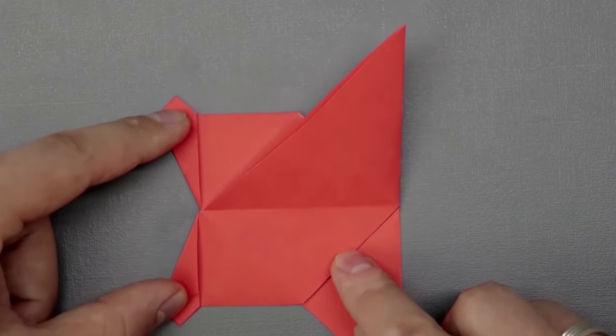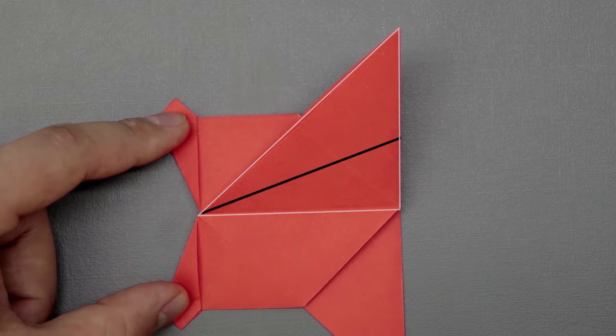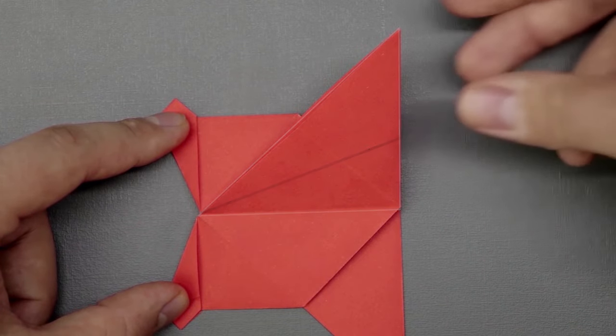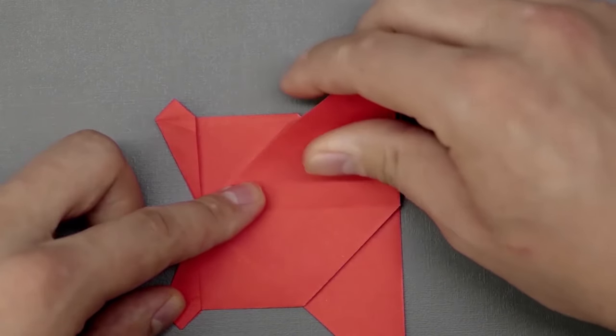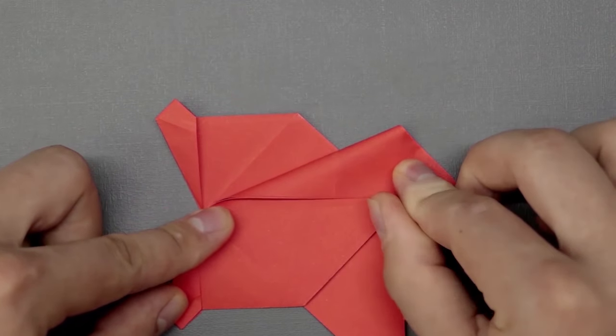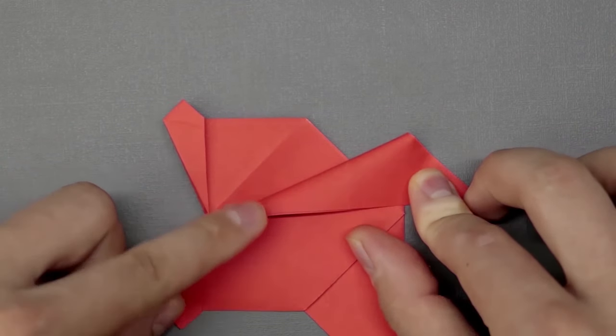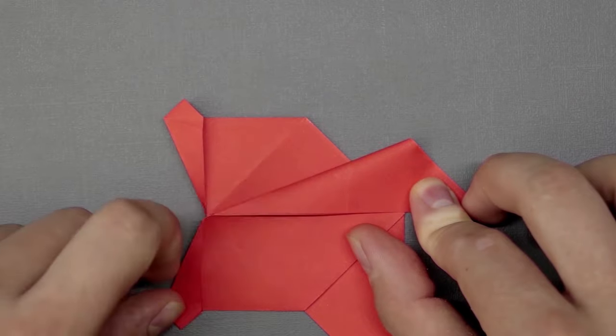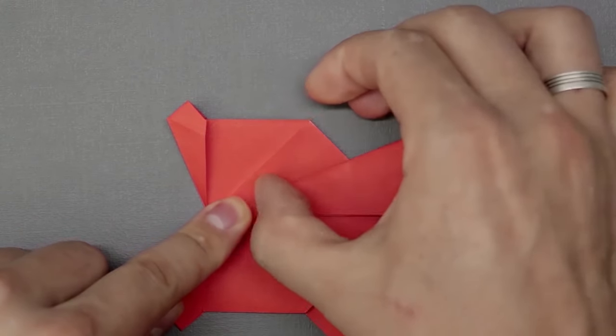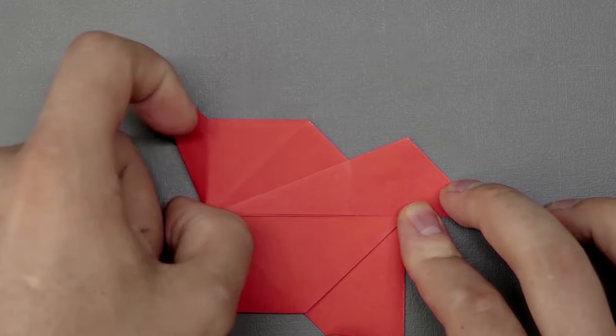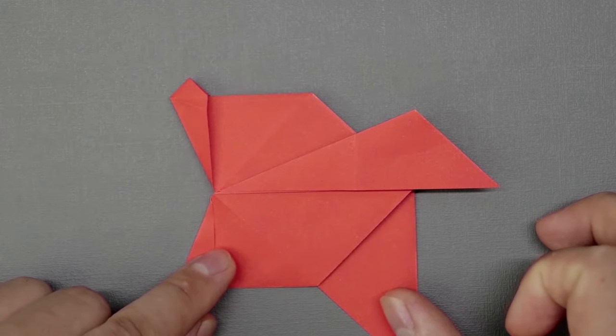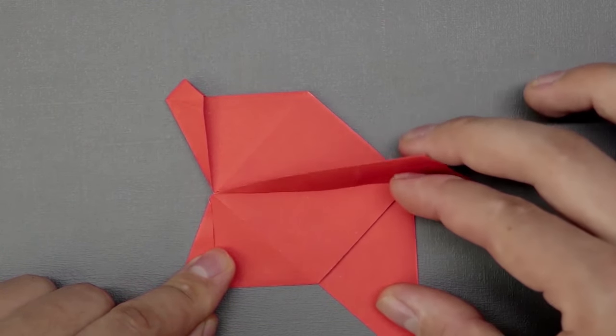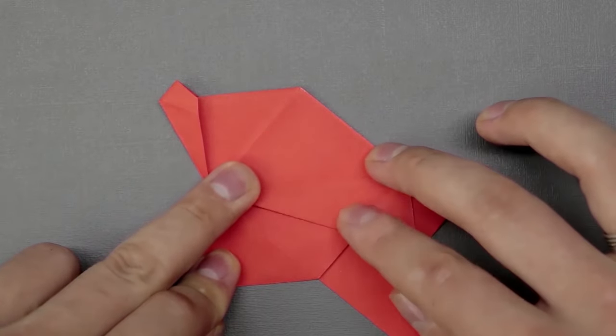And fold it diagonally. Just like before, the top edge to the horizontal crease below. Reinforce, and bring back down, fold using the existing crease.